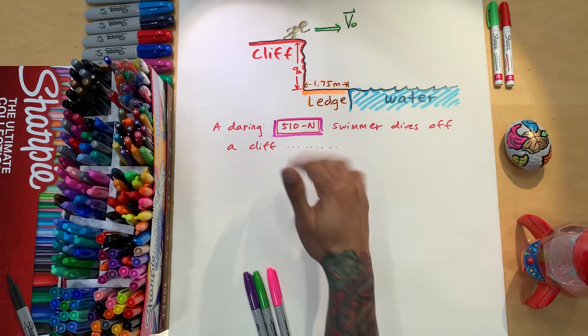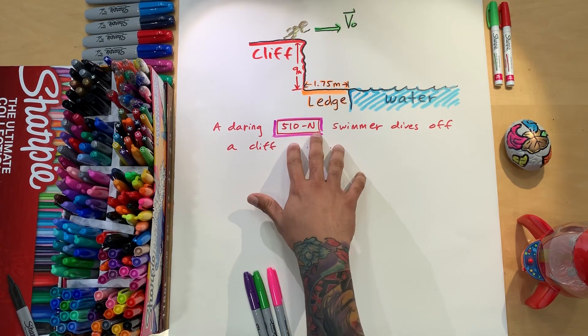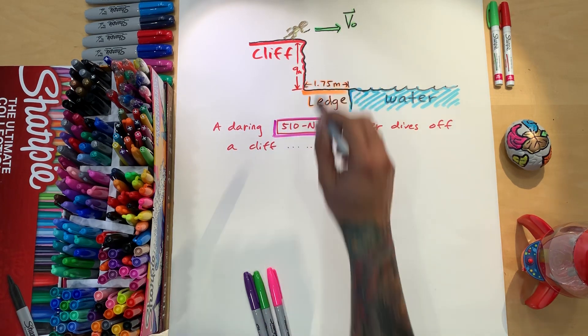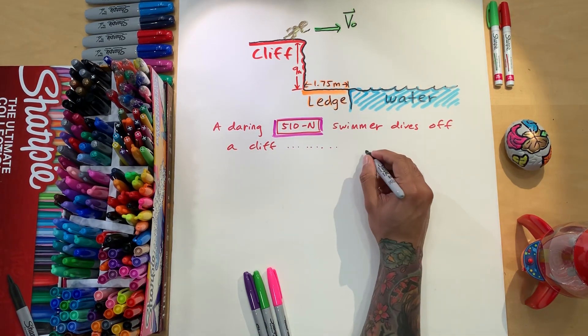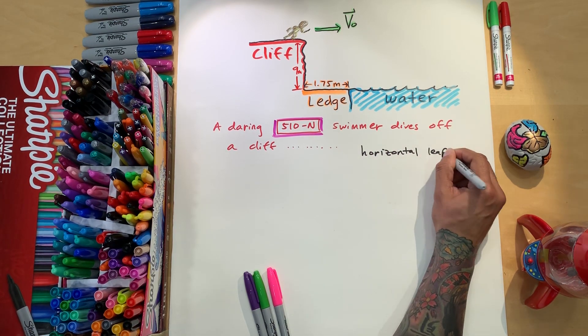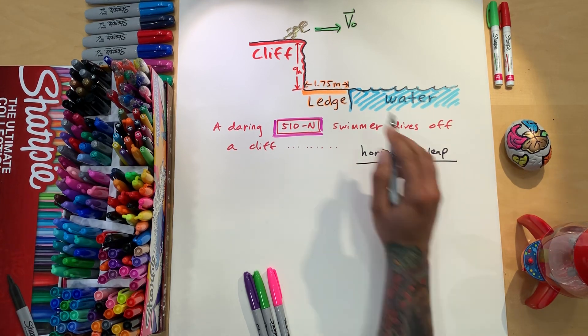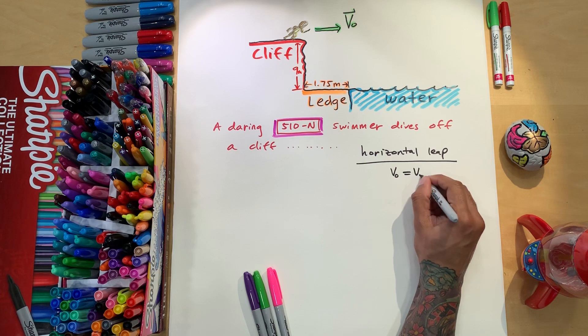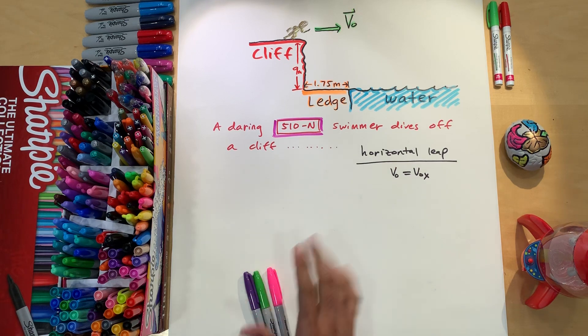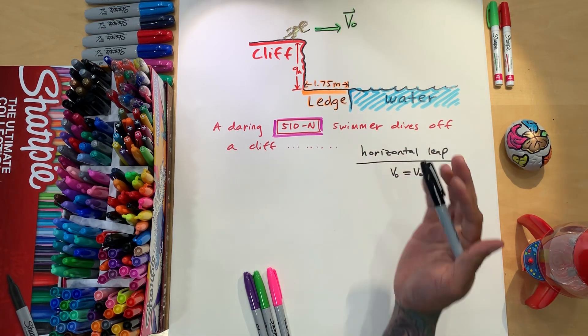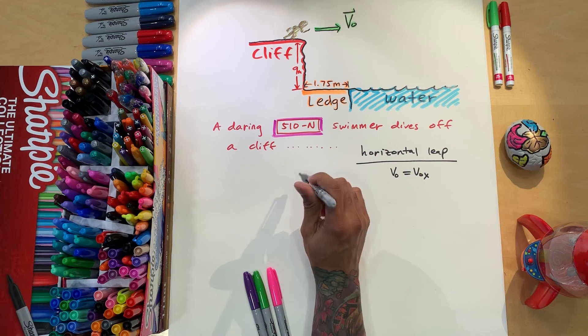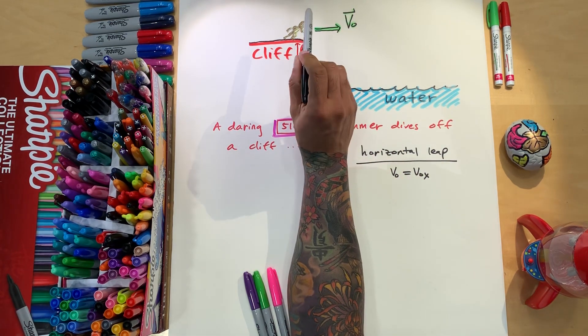let's use the rest of it. So it says a daring 510 Newton swimmer dives off a cliff with a horizontal leap. So that's a key word. Horizontal leap. So let's write that here because that's important. Horizontal leap. So if you see these words, right, you immediately know that that velocity initial is actually velocity initial on the X. Okay, because it's a horizontal leap. So you have no velocity initial on the Y. So we are ready to deduce that.